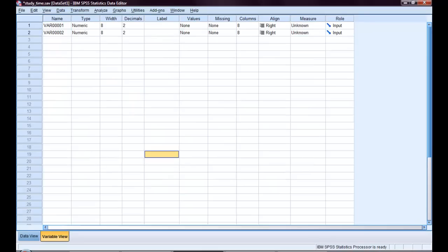Now I'll go into my variable view and label both of my variables. Variable one will be hours. I'm going to give it the label hours studied. I'm also going to make sure that I change the measure on both of my variables to scale.